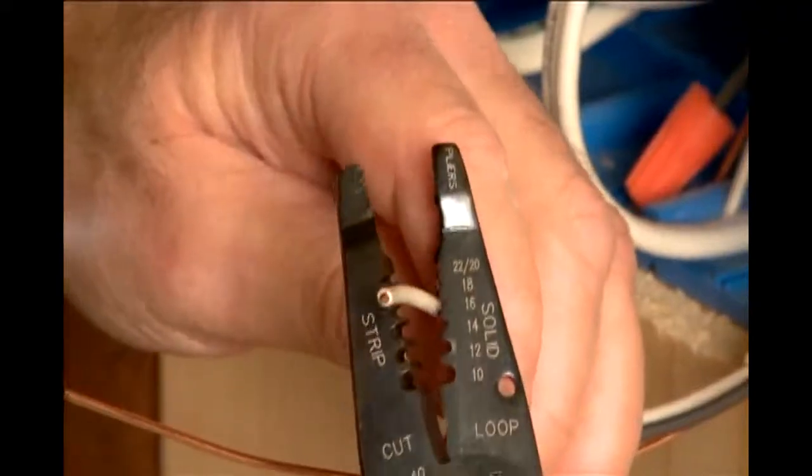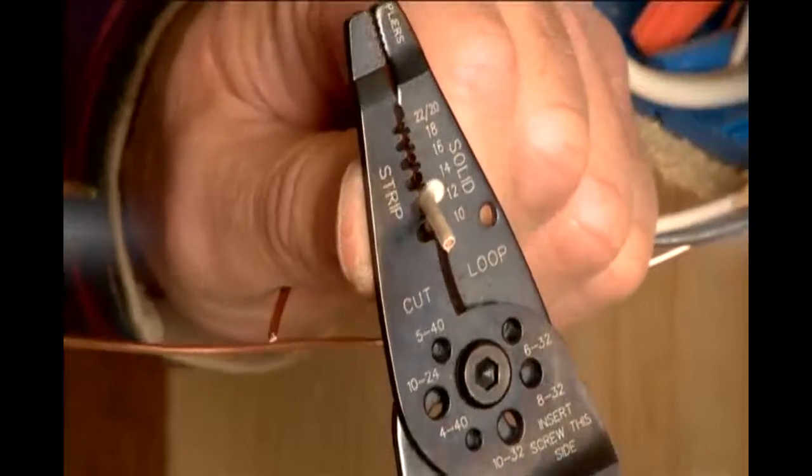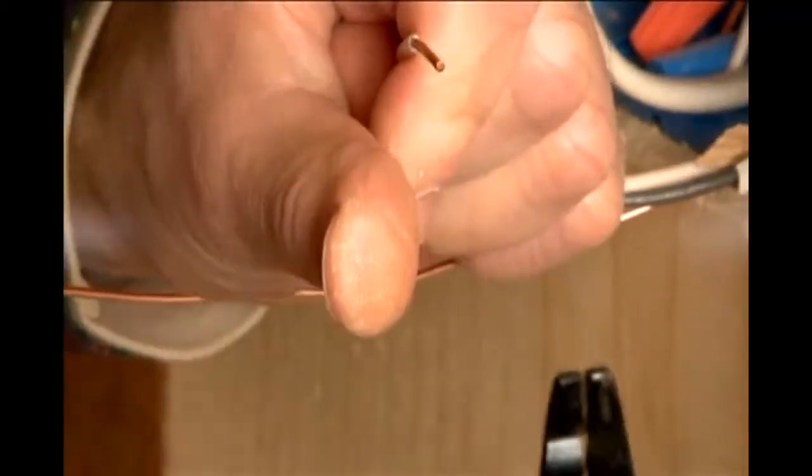To use the tool, place the wire in the appropriate hole, squeeze the handles to cut the insulation, and then pull the tool forward to strip the wire.